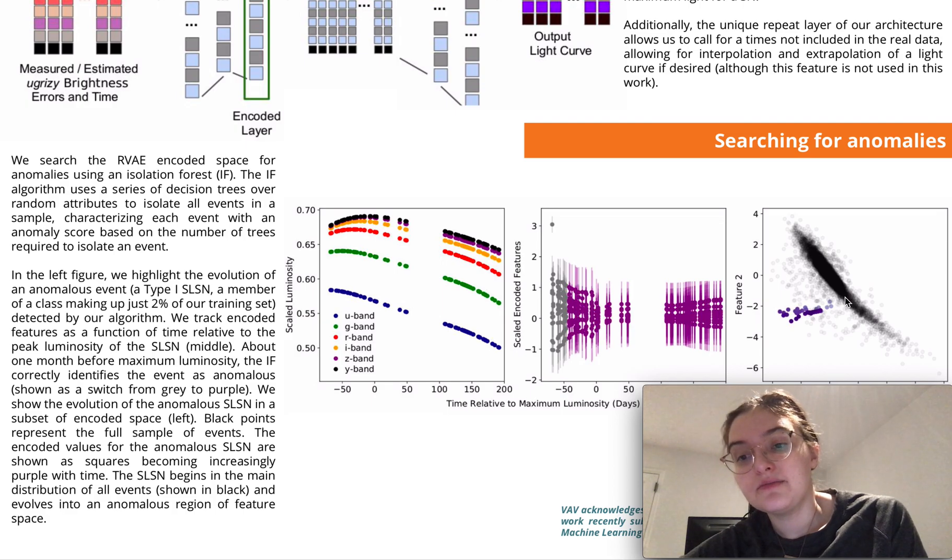And in fact we can see that in encoding space, this is just one subset of that space, where I'm showing the specific event kind of traveling as a function of time where purpleness represents time and you can see that it walks away from the majority of classes shown in black as it gets more anomalous in time.